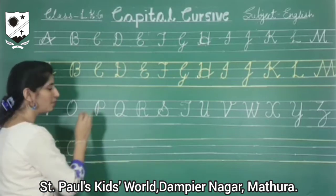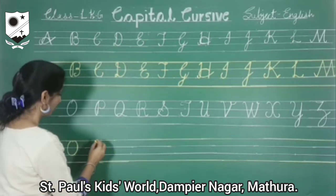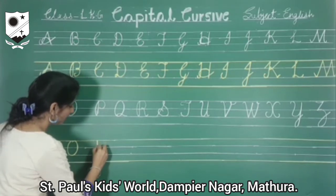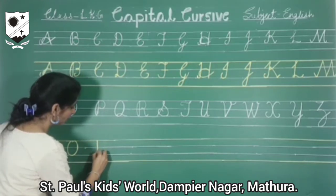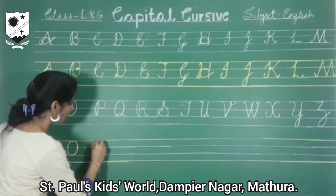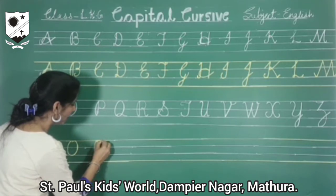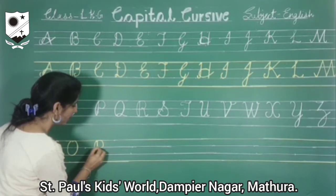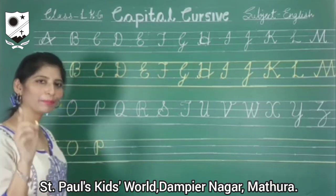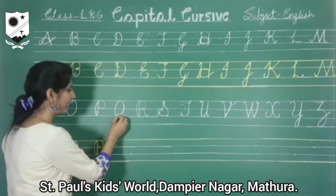Now capital P. Start from the first line. Straight line towards the third line — loop, or curve you can say. Again curve towards the third line and leave it. Capital P.